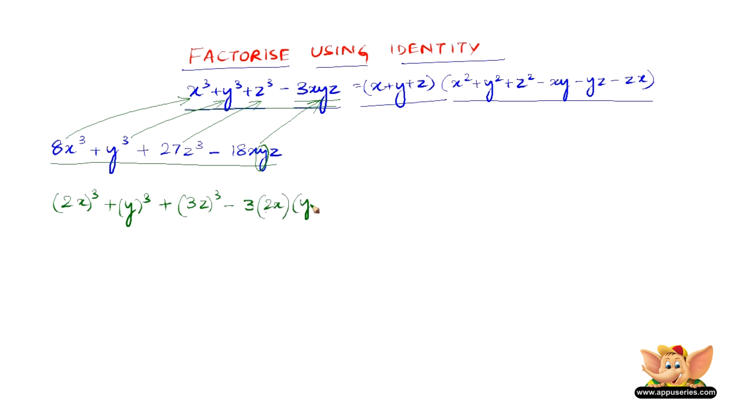We have 3 into 2x into y, so the z has to be 3z. Now, this is exactly of this form. So we can write this as x + y + z for this whole thing.